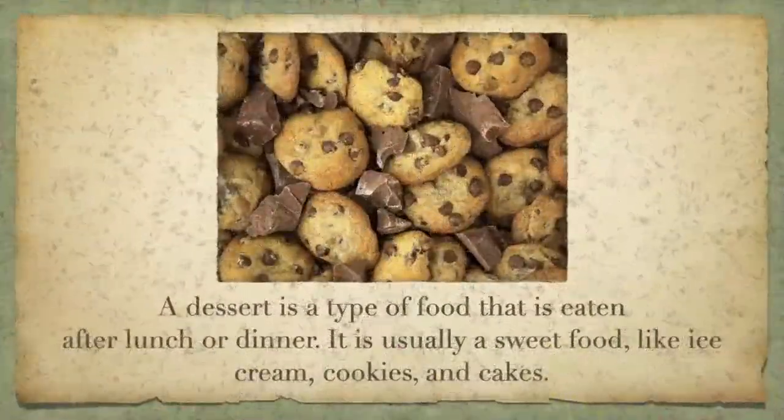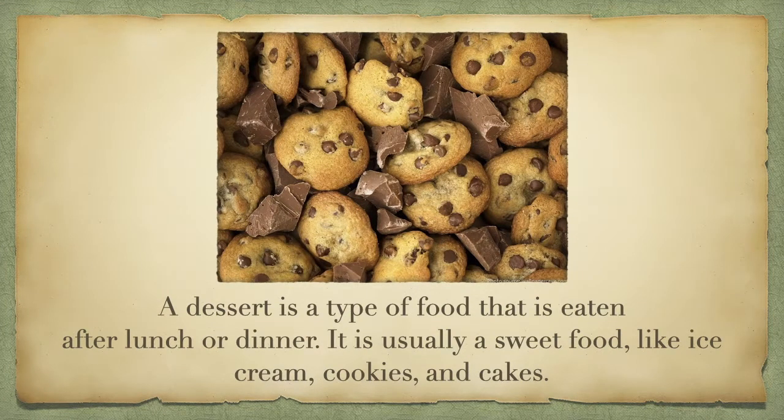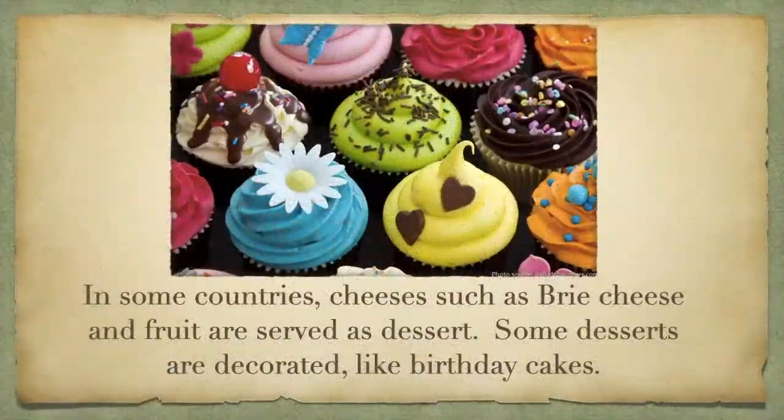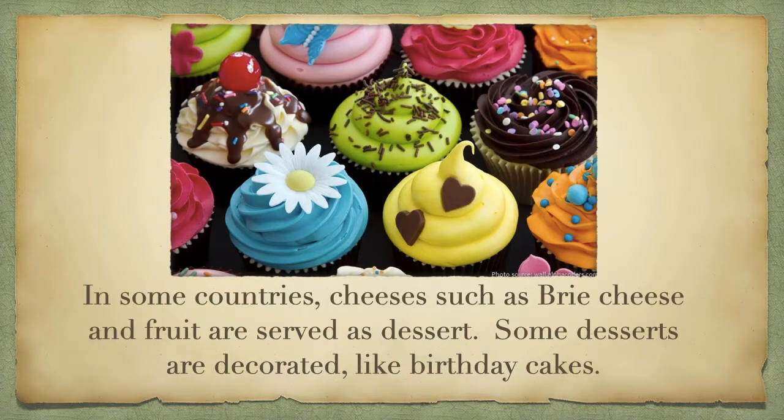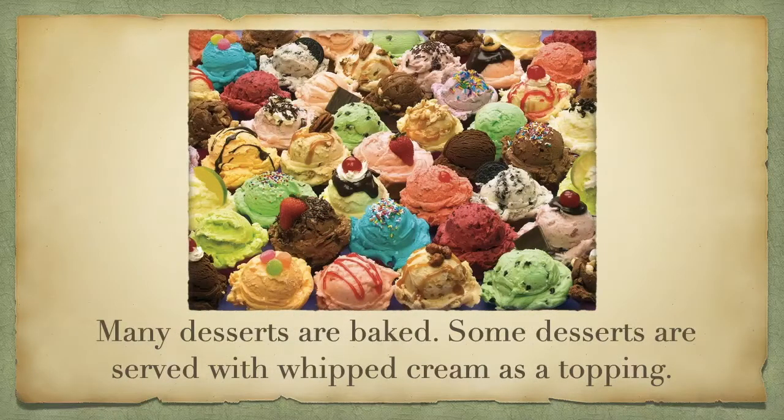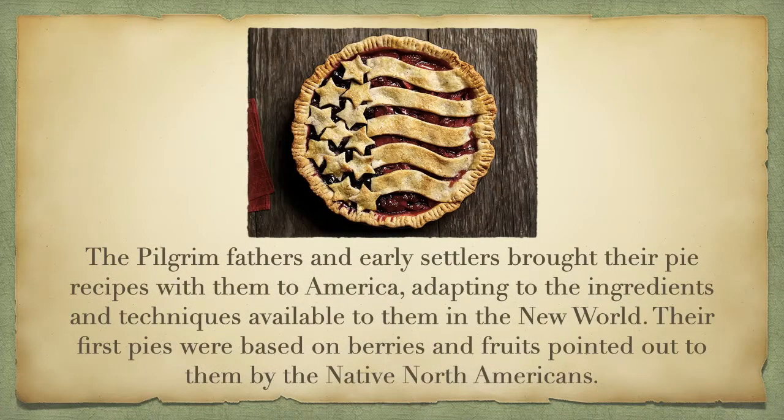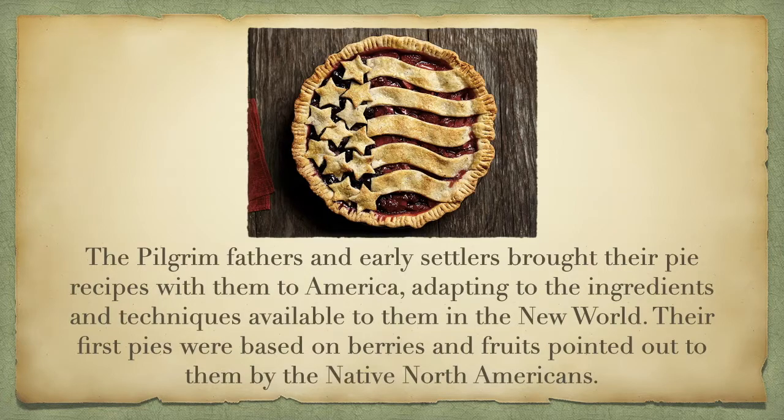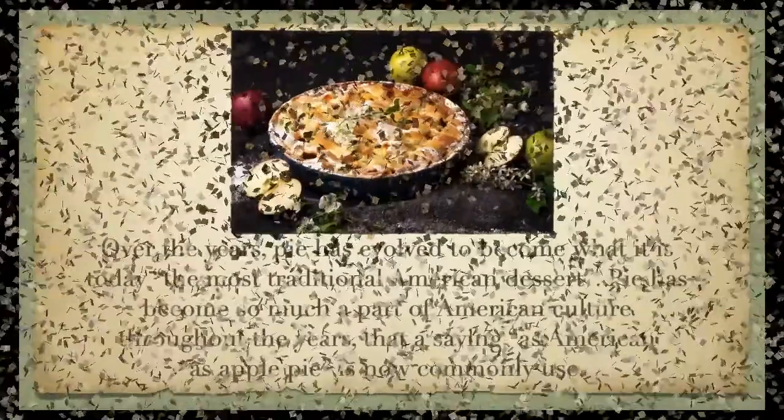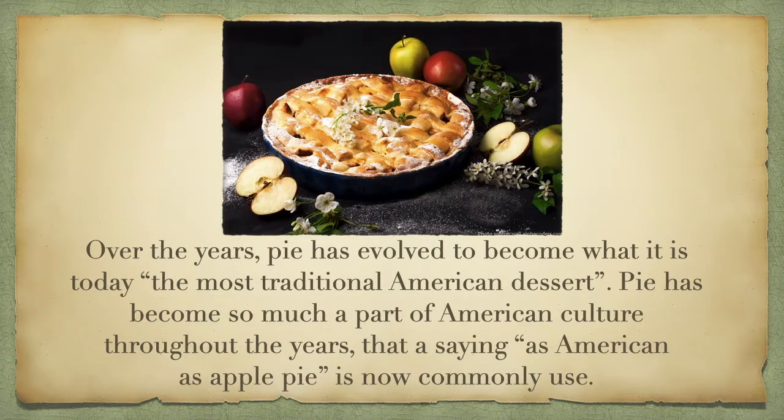A dessert is a type of food that is eaten after lunch or dinner. It's usually a sweet food, like ice cream, cookies, and cake. In some countries, cheese, such as brie cheese and fruit, are served as dessert instead. Some desserts are decorated like birthday cakes. Many desserts are baked, and some desserts are served with whipped cream as topping. The Pilgrim Fathers and Early Settlers brought their pie recipes with them to America, adapting to the ingredients and techniques available to them in the New World. Their first pies were based on berries and fruits that were pointed out to them by the Native American people. Over the years, pie has evolved to become what is the most traditional American dessert.